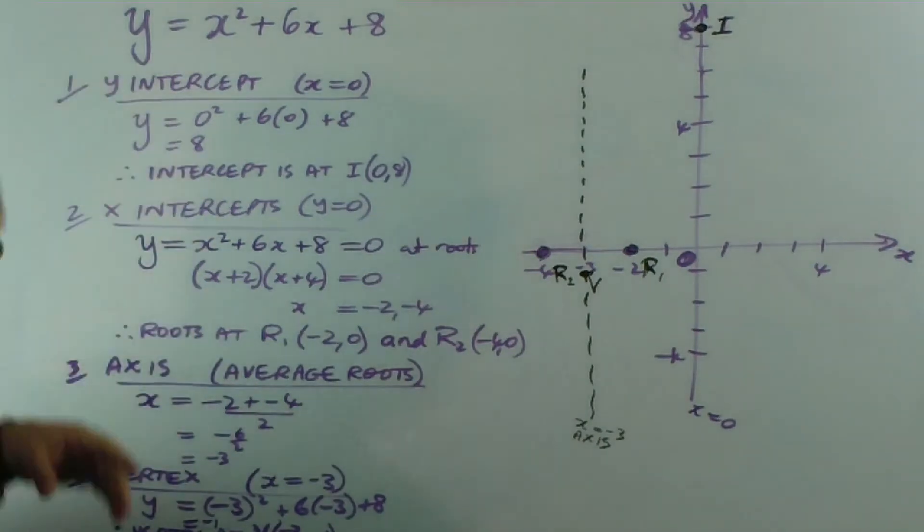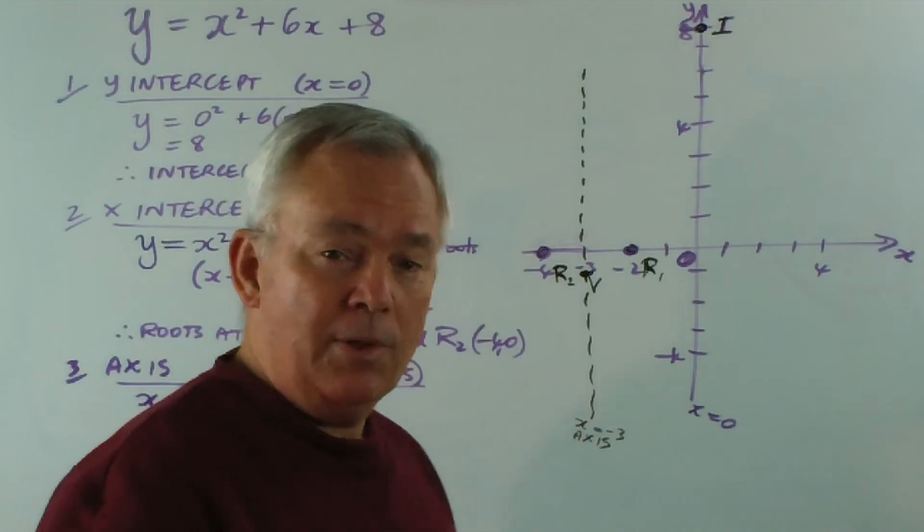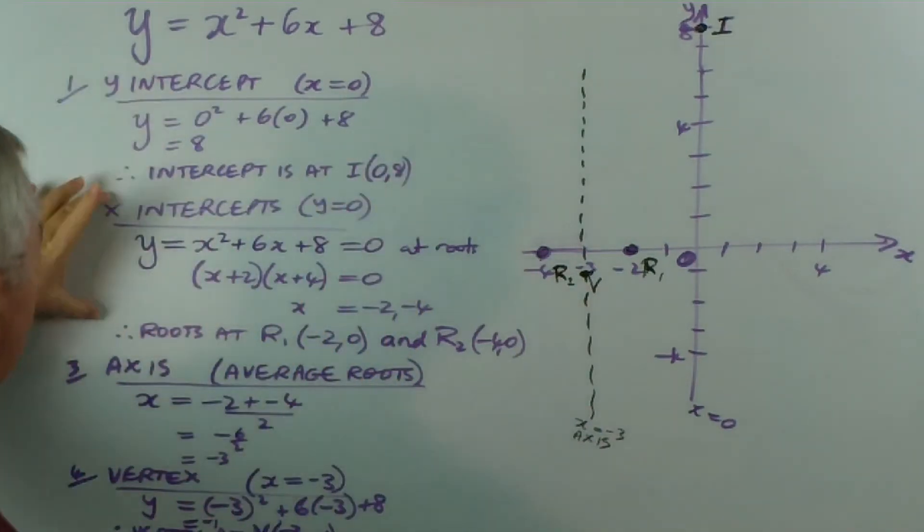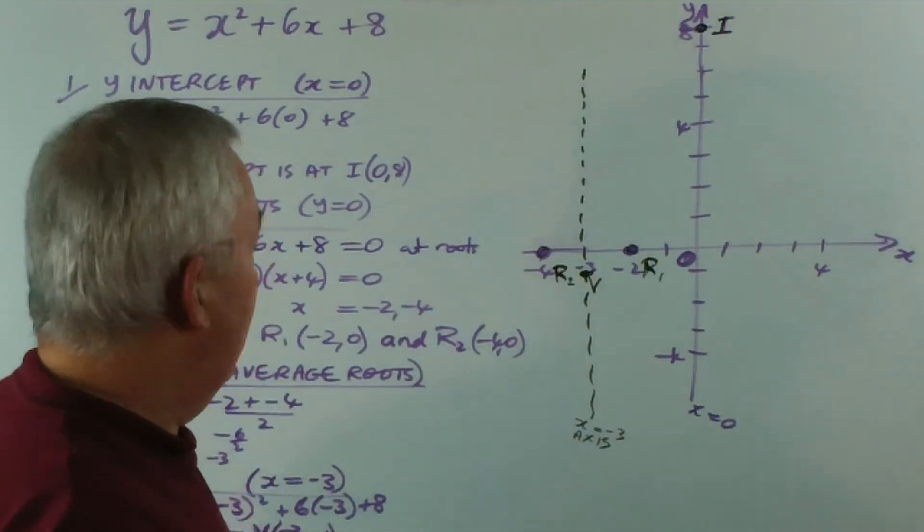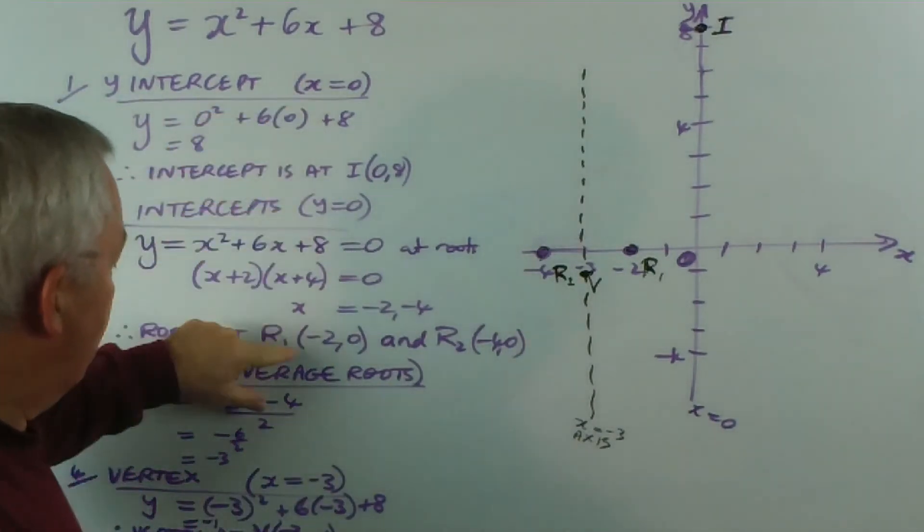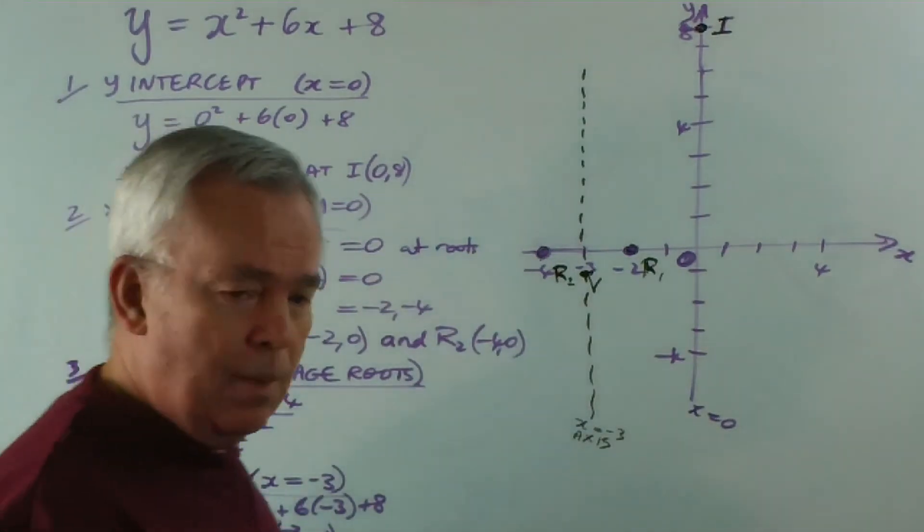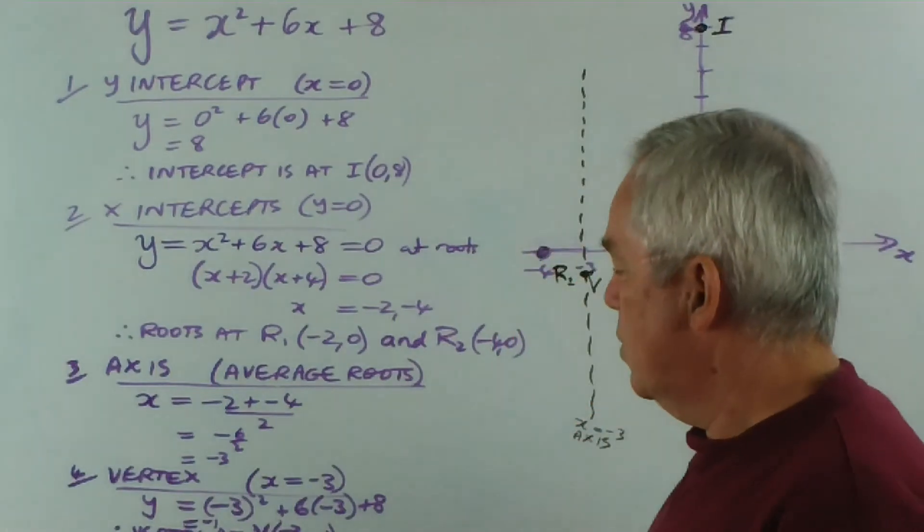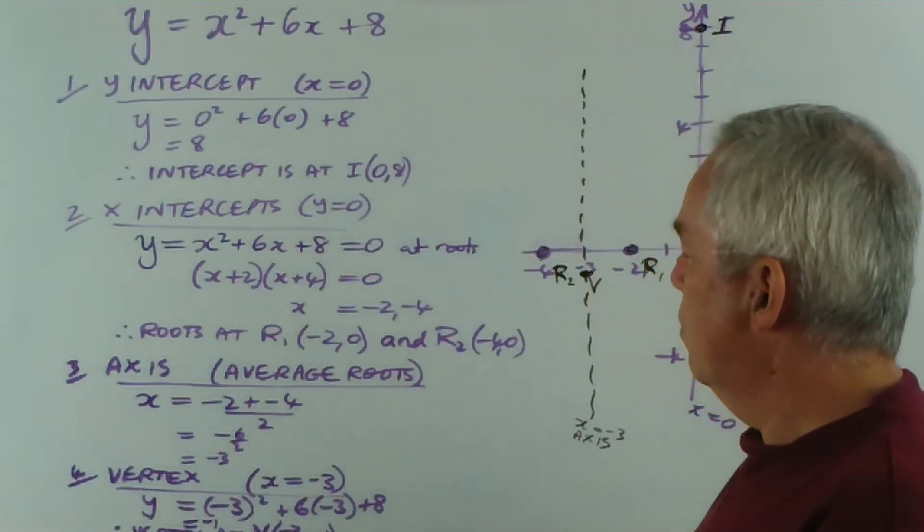This is the four-step procedure I'll be demonstrating over and over again for you to find the y-intercepts, the x-intercepts, the axis and the vertex in that order. I also like to explain each time how I'm finding them and set them out with headings. And if you follow this procedure, it's very logical, very methodical, and it's very hard to go wrong.